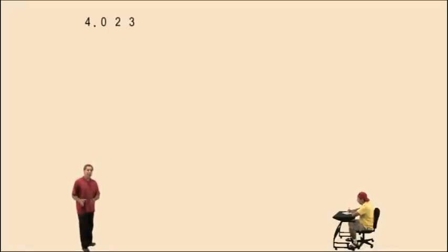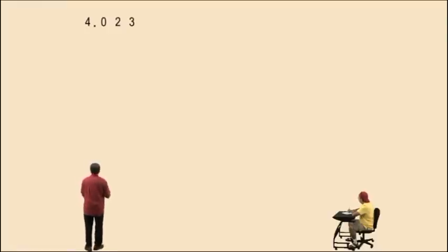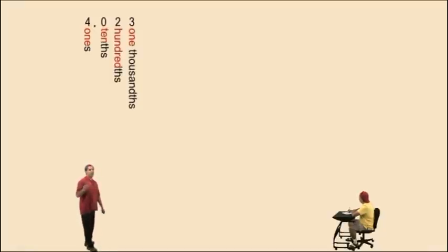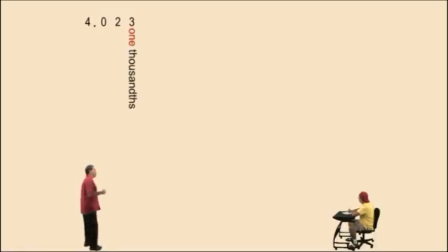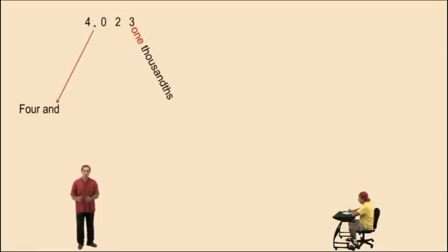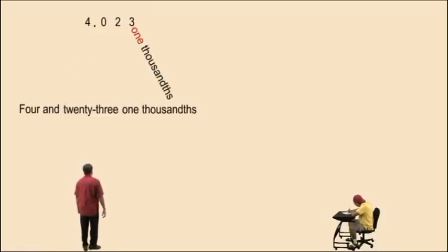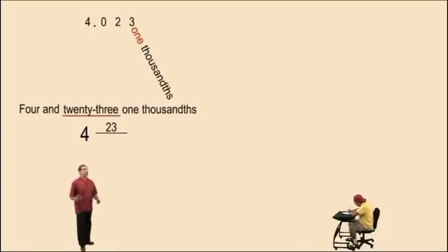Now here we have a mixed number. Remember, a mixed number is a whole number part and a fractional part. Remember, decimals are just fractions that have denominators of powers of ten. So here, let's find the place value of the rightmost digit: ones, tenths, hundredths, one thousandths. The three is in the one thousandths place value. Now notice our whole number part is four, and we use the word 'and' — and connects the whole number part to the fractional part. So this number is read as four and twenty-three one thousandths. To write it in its mixed number notation, it's four and twenty-three over one thousand.